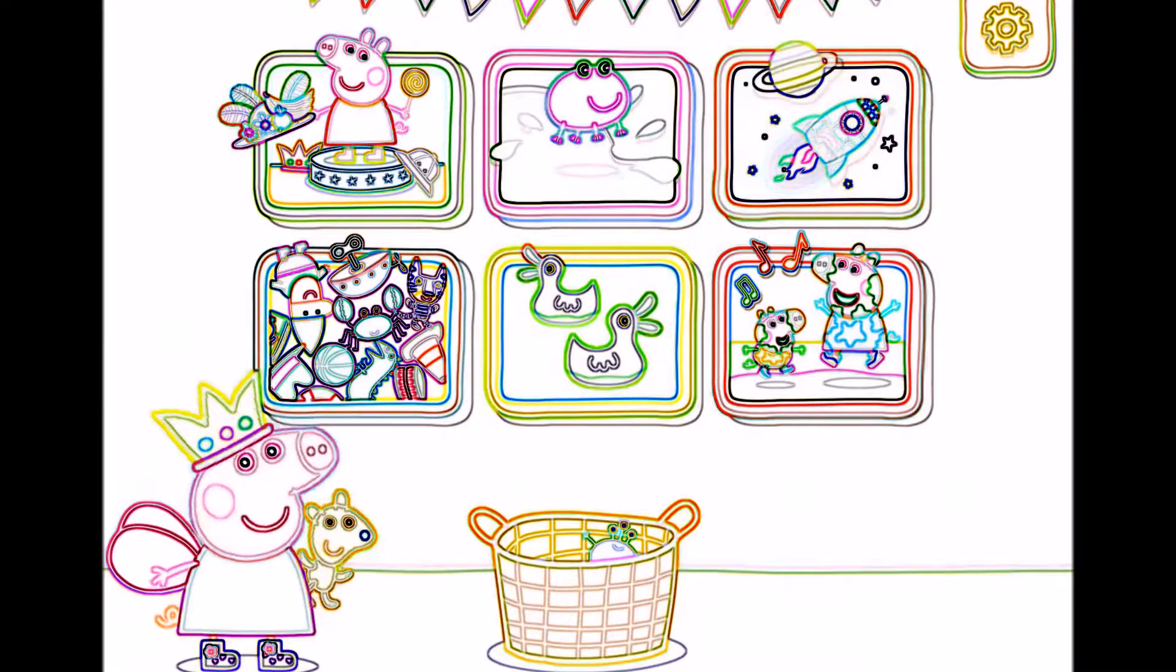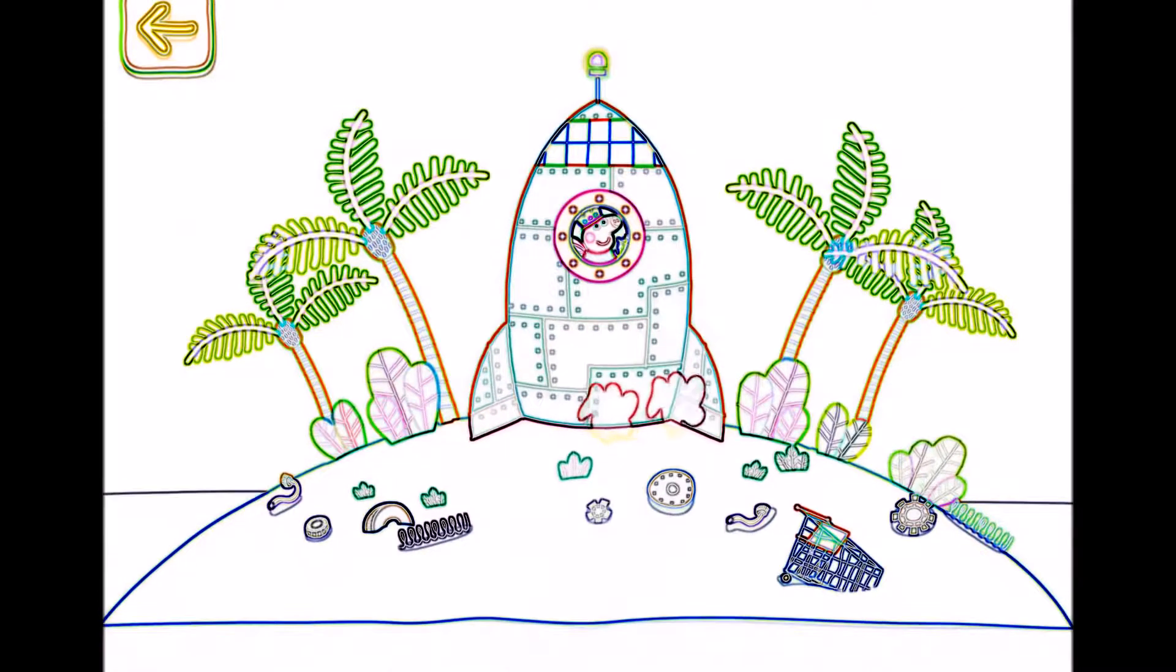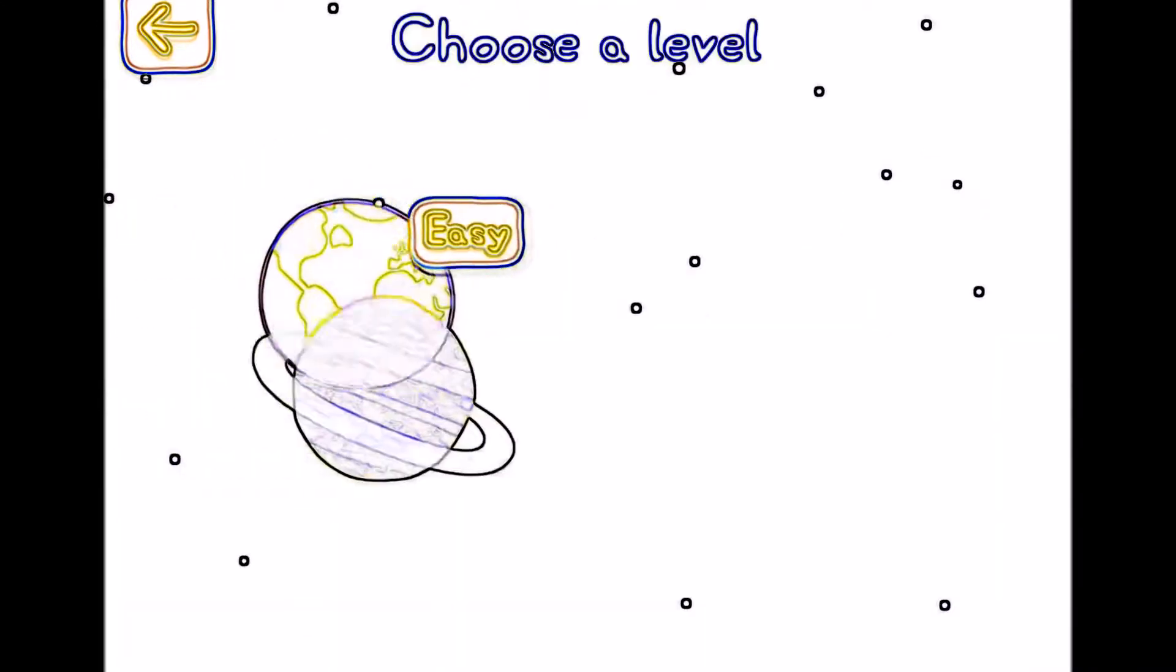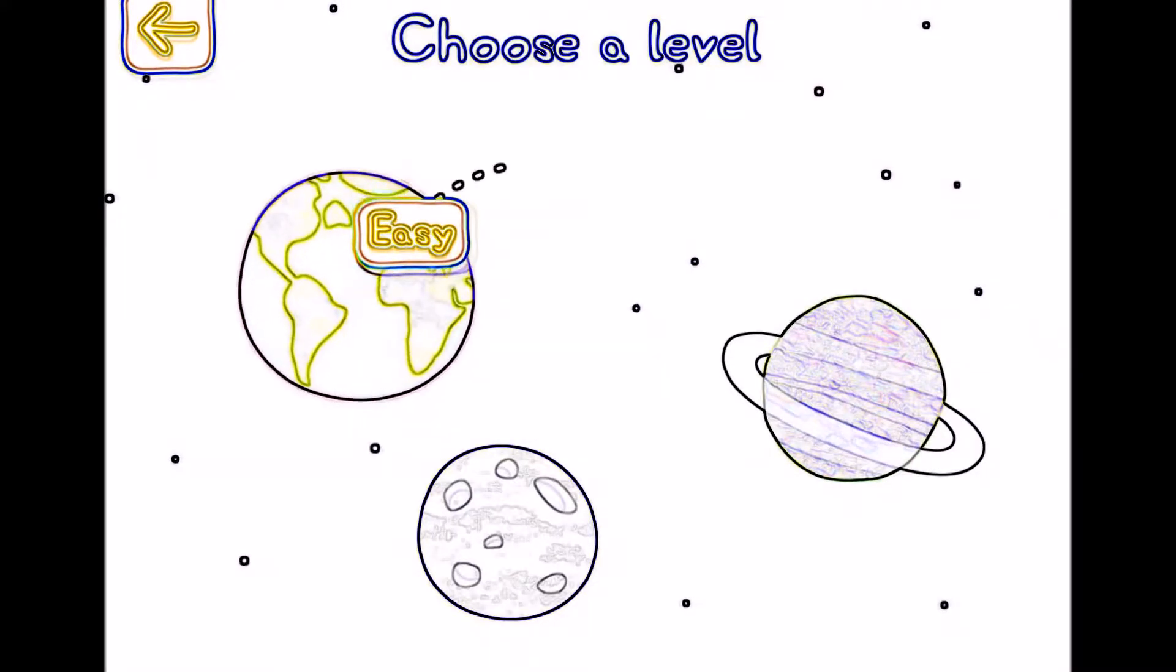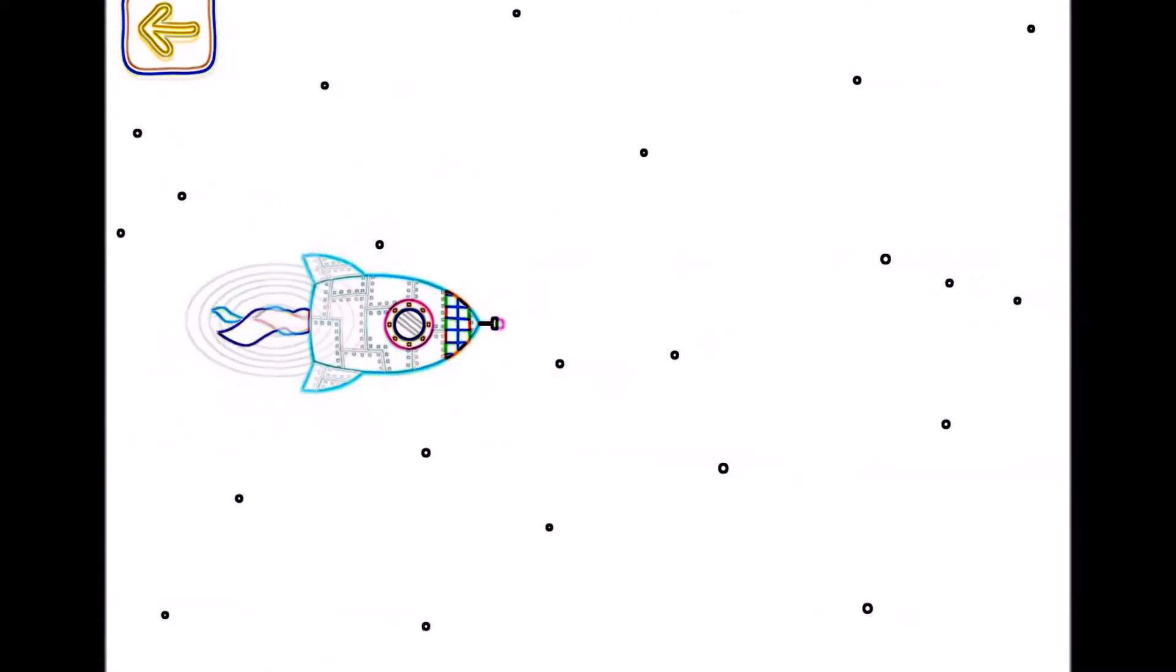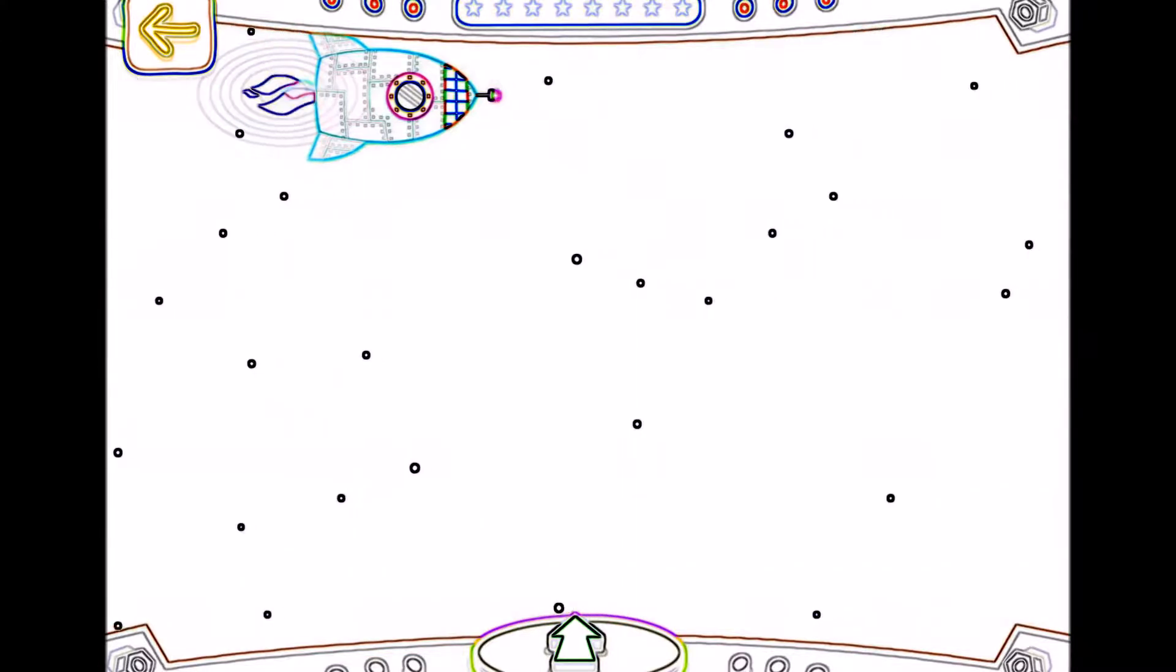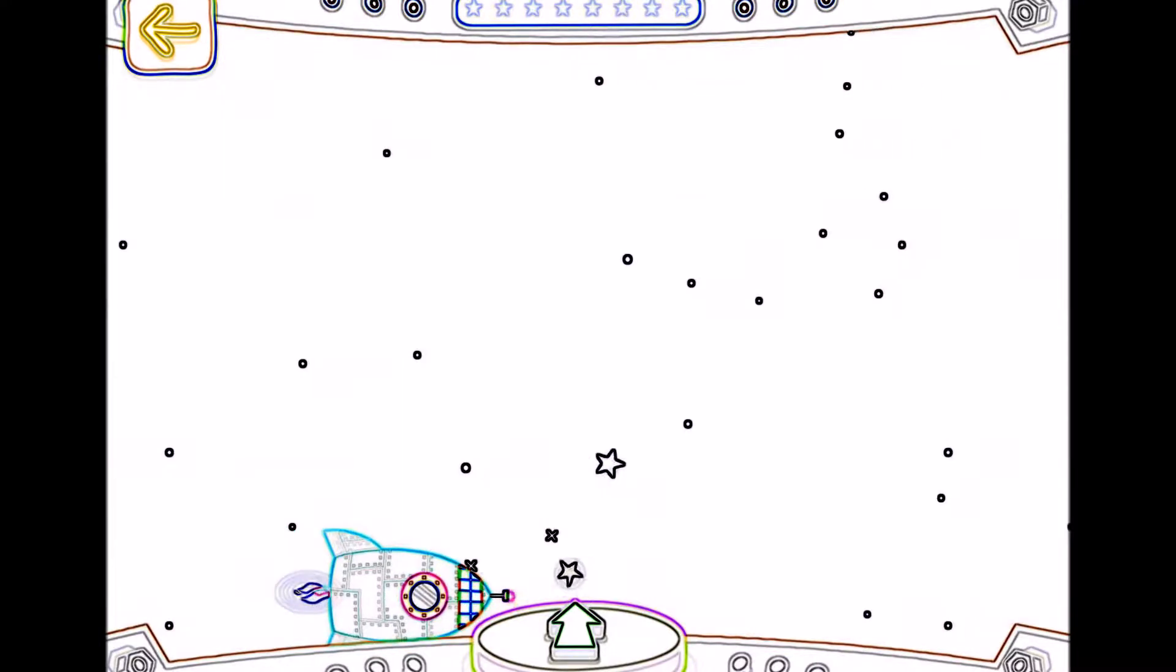Let's go to space. Peppa and her friends are flying to the moon in a rocket. Five, four, three, two, one. Blast off! Tap on planet Earth to start your adventure. Peppa is in space. Help Peppa fly the rocket above the path of stars. Press and hold the green button to make the rocket fly out. Take a finger off the green button to make the rocket fly down. Are you ready?